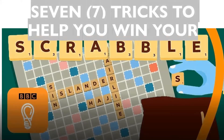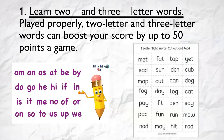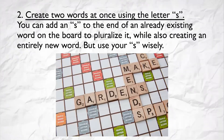7 tricks to help you win at Scrabble. Trick 1: Learn 2 and 3-letter words and play them properly. Two-letter and three-letter words can boost your score by up to 50 points a game. Trick 2: Create two words at once using the letter S. You can add an S to the end of an already existing word on the board to pluralize it, while also creating an entirely new word. But use your S wisely.